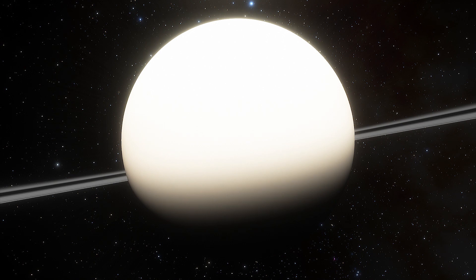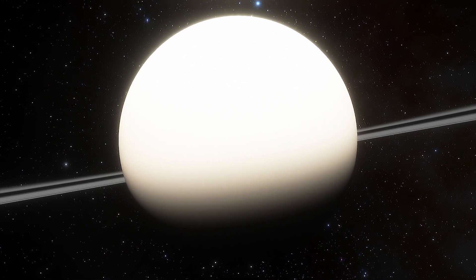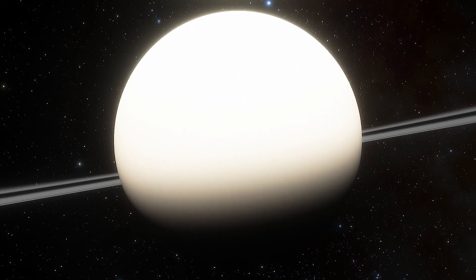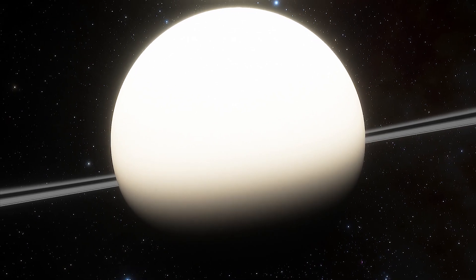The planet, called J1407b, is much larger than Jupiter or Saturn. Transit observations revealed that its ring system is about 200 times larger than Saturn's rings.